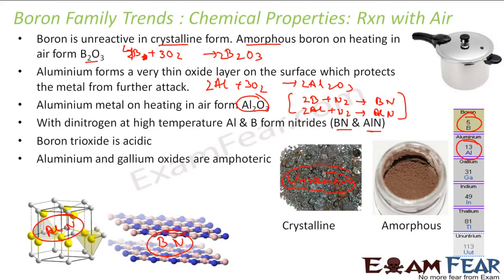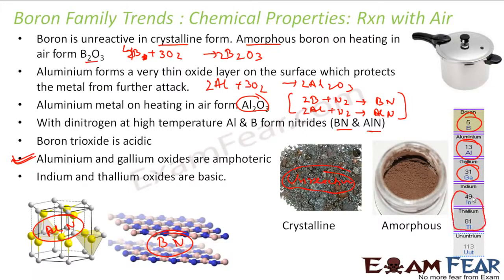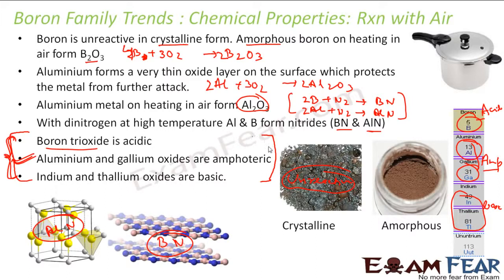Let's talk about gallium also. Aluminium and gallium are amphoteric — they react with both acid and base. This can be proven from various reactions: aluminium reacts with sodium hydroxide and aluminium reacts with dilute boric acid; similarly for gallium. The oxides of indium and thallium are basic in nature, while aluminium and gallium oxides are amphoteric, and boron oxide is acidic. As we go down the group, the oxides become increasingly basic — we'll discuss this in detail in the next slides.